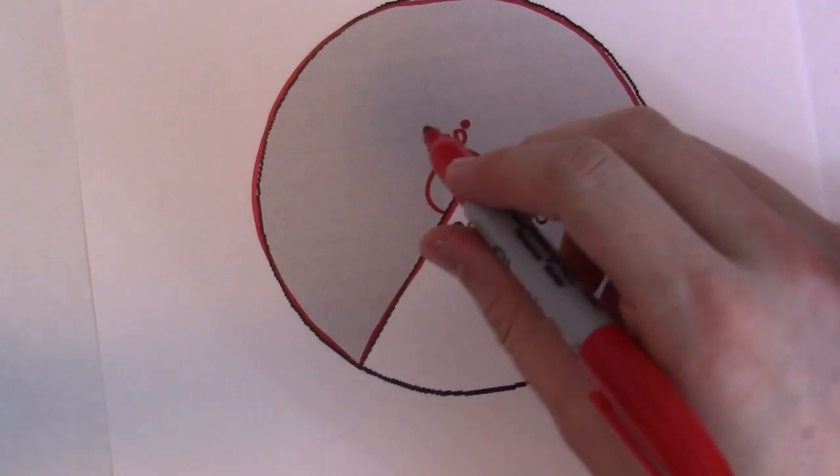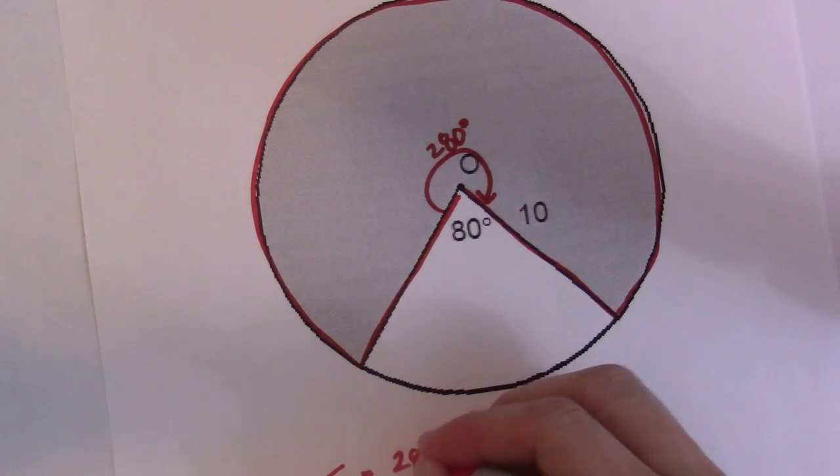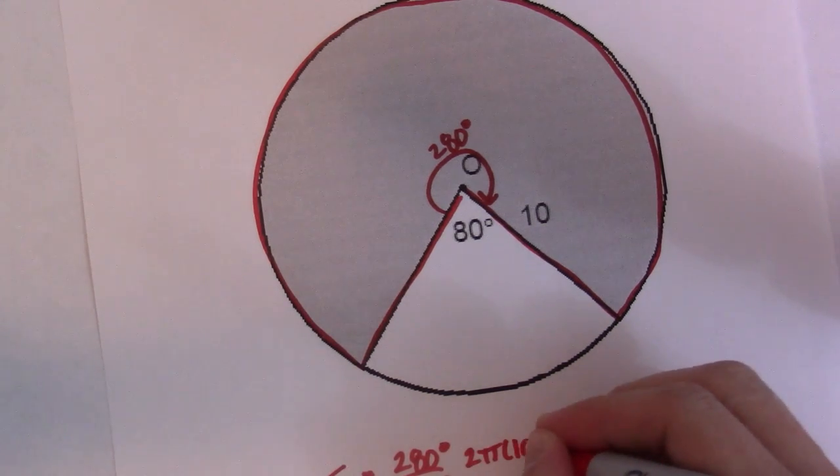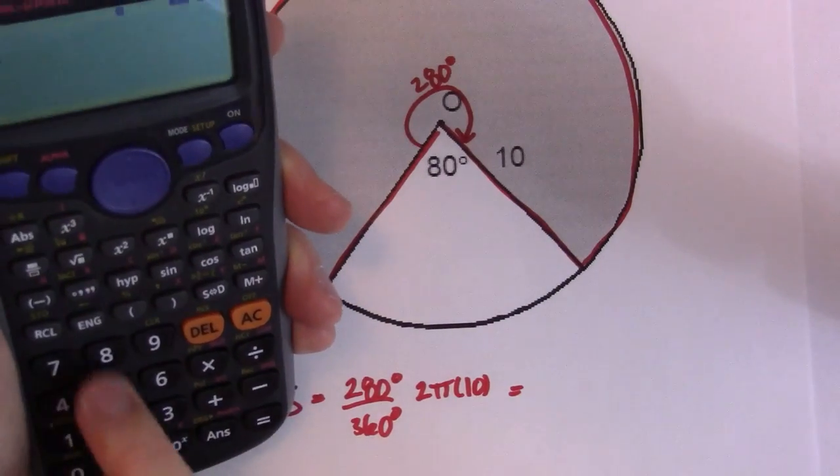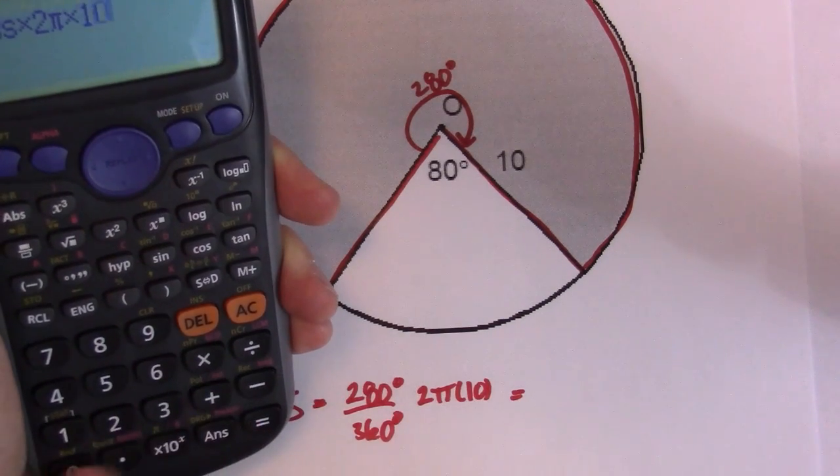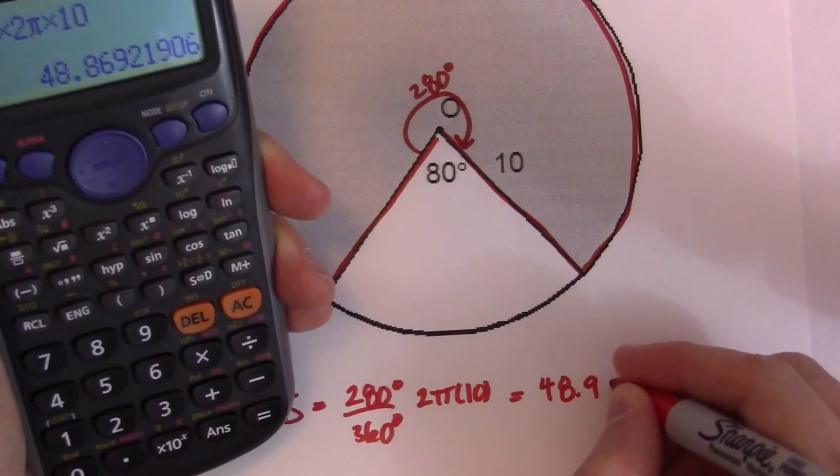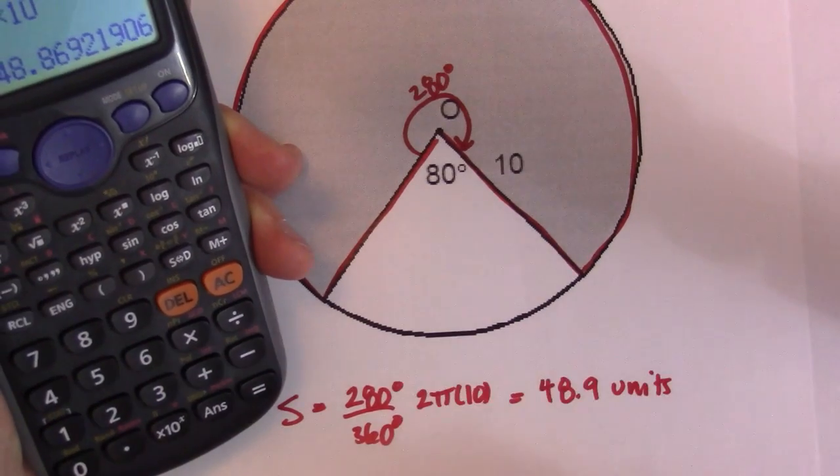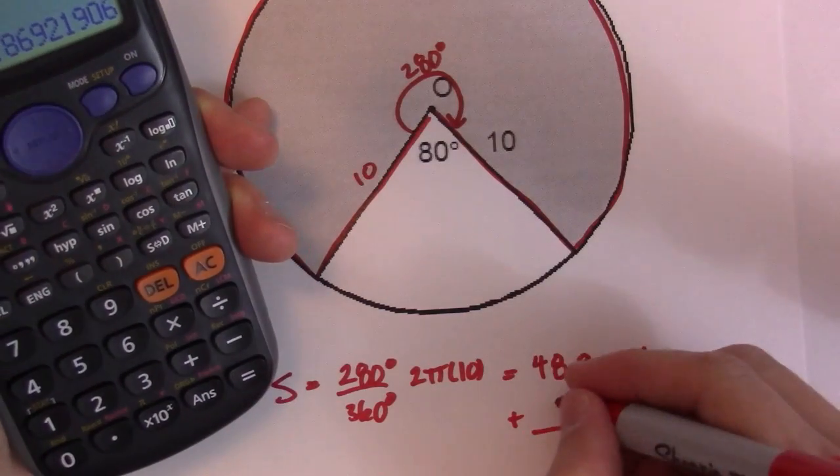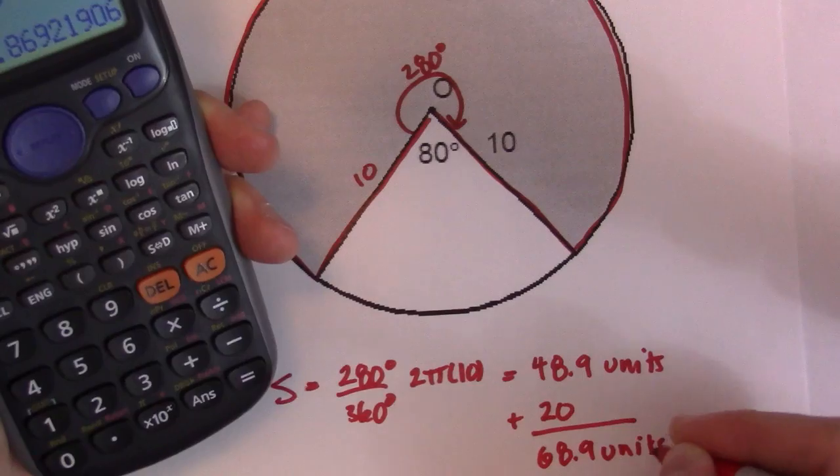So I'll find the arc length first. So S is equal to 280 divided by 360 times 2 pi times 10. So I'll work that out. So 280 divided by 360 times 2 pi times 10. So I'll change it to a decimal so I get 48.9 units. So all I have to do now is I have to add to that my two radiuses. So I have 10 and 10 so I'll add 20 to it. So that gives me 68.9 units. It's the total perimeter of that shaded area.